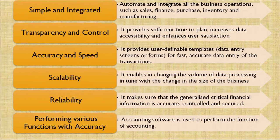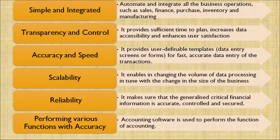Fifth, reliability: it makes sure that critical financial information is accurate, controlled, and secured. Therefore, we can rely on the accounting entries processed through computer-aided systems. Last, performing various functions with accuracy: accounting software is used to perform the functions of accounting, and thus accounting is processed with accuracy through computer-aided systems.